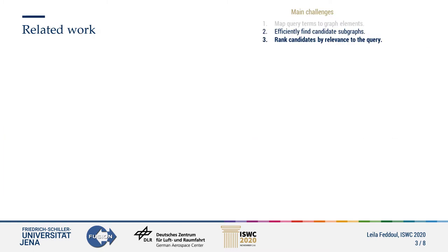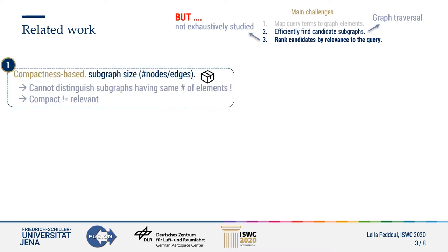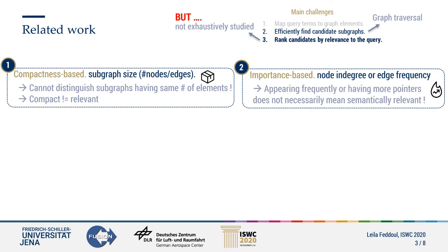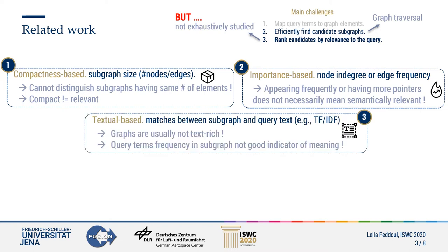Many works address candidate retrieval, mostly using graph traversal algorithms, but subgraph ranking is still not sufficiently studied. In the literature, we can distinguish between three types of rankings. Compactness-based consider the size of subgraphs, but they cannot distinguish between subgraphs having the same number of elements. Importance-based are mostly based on structural factors like node in-degree, but it's still not a logical factor of being semantically relevant. Finally, textual-based rely on string matches, but in graphs, textual information is usually rather scarce.